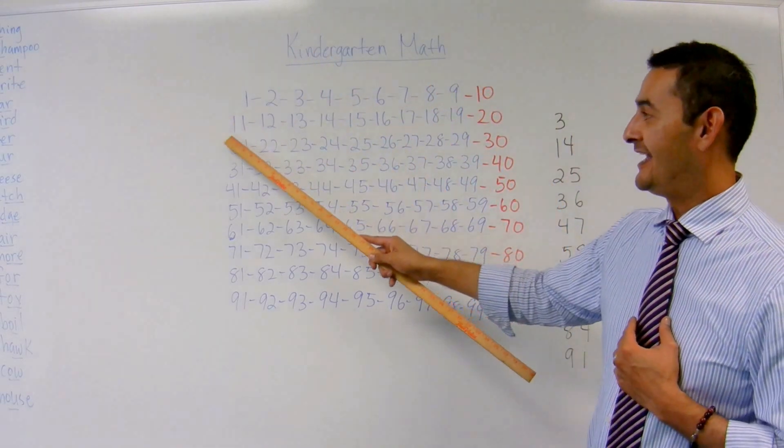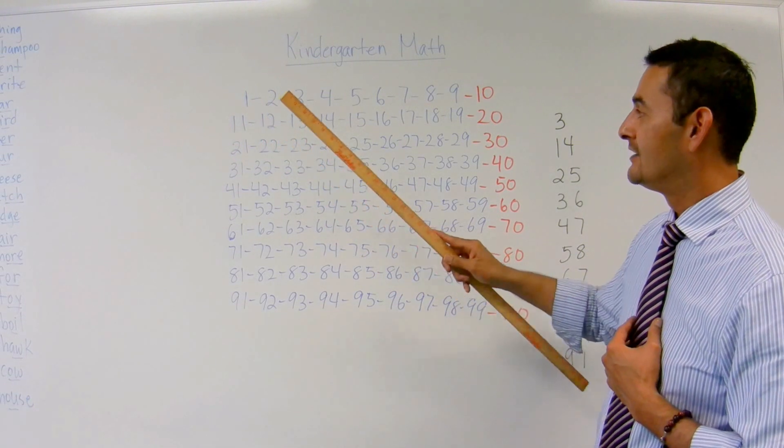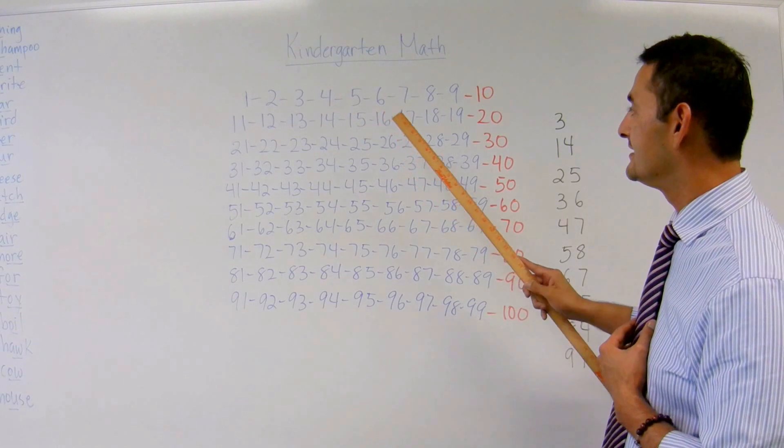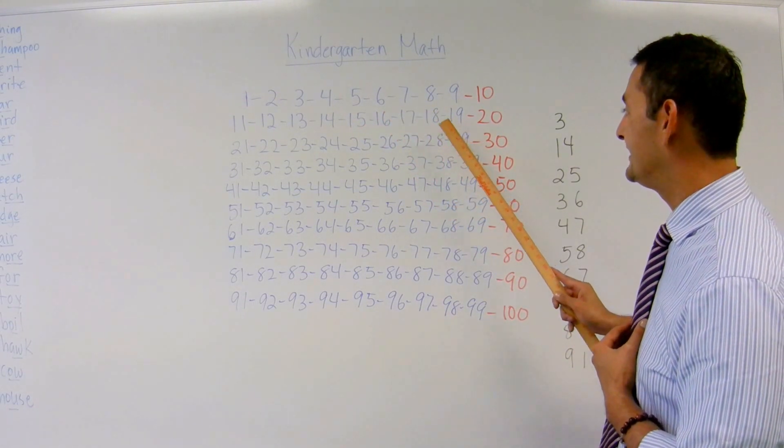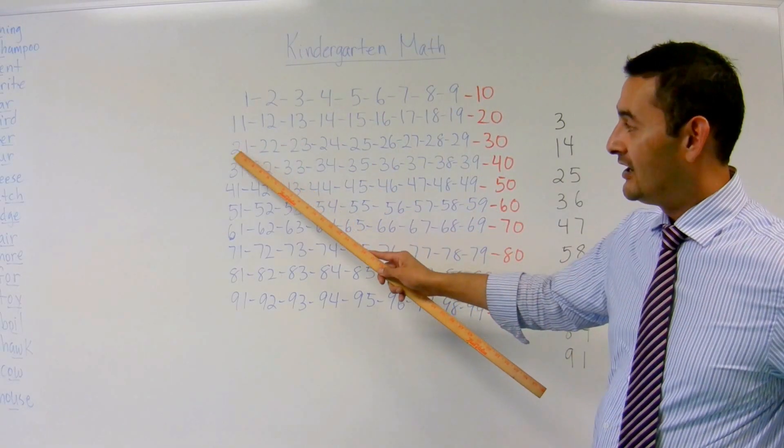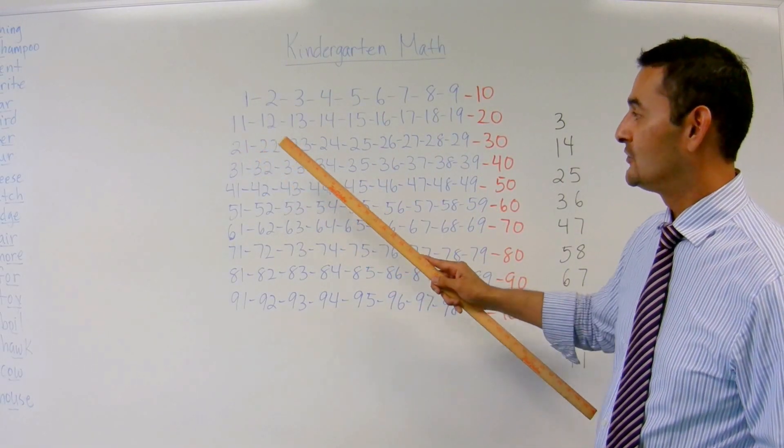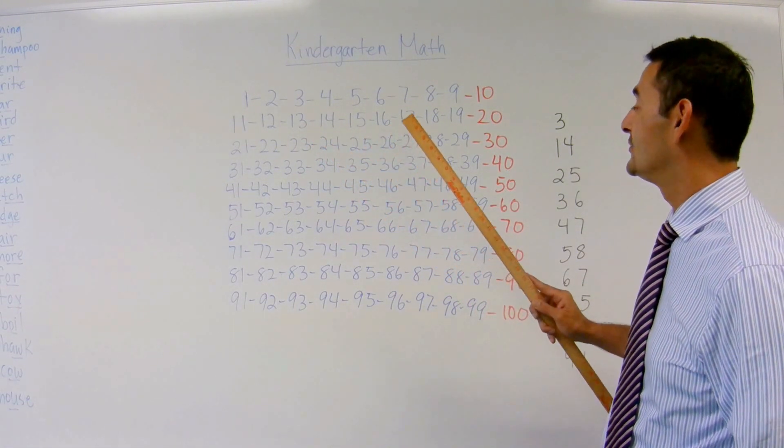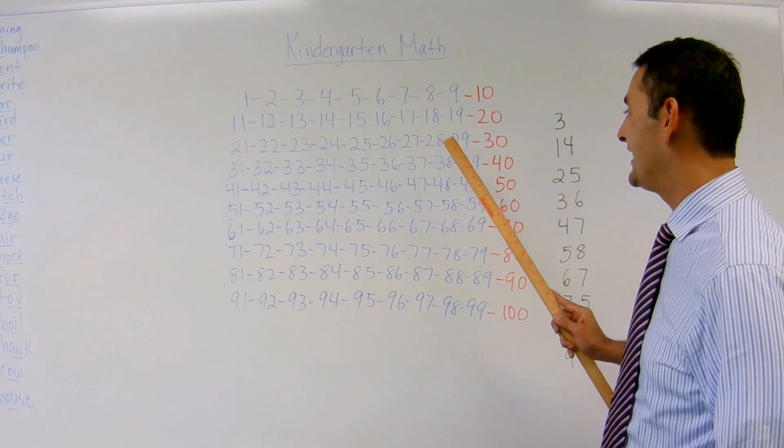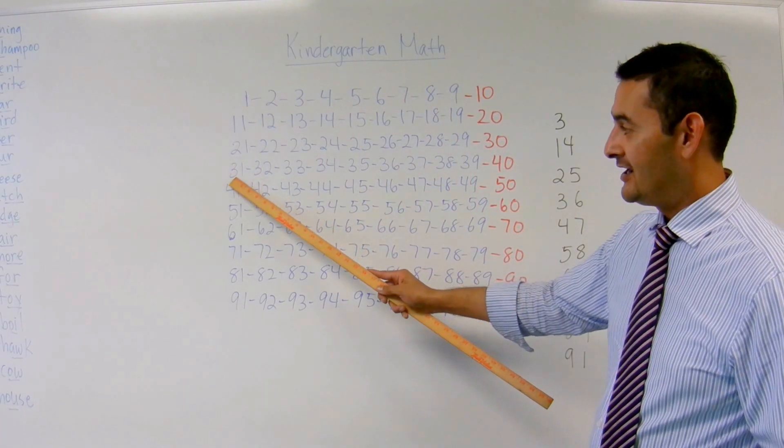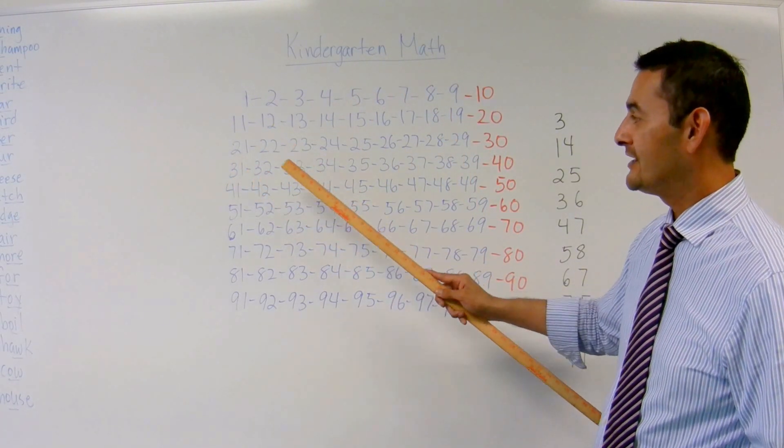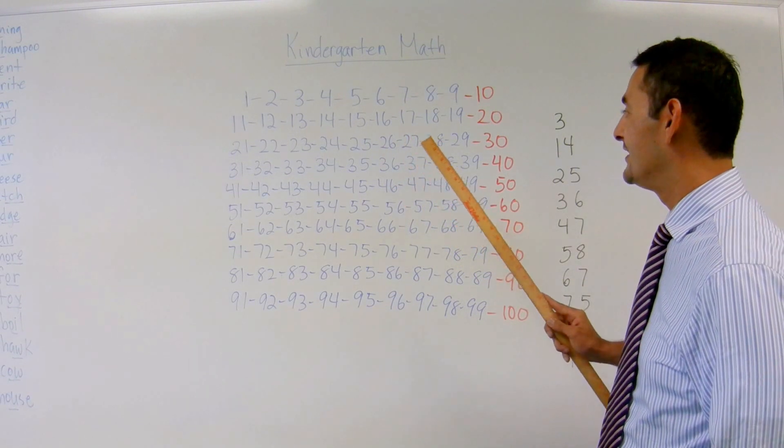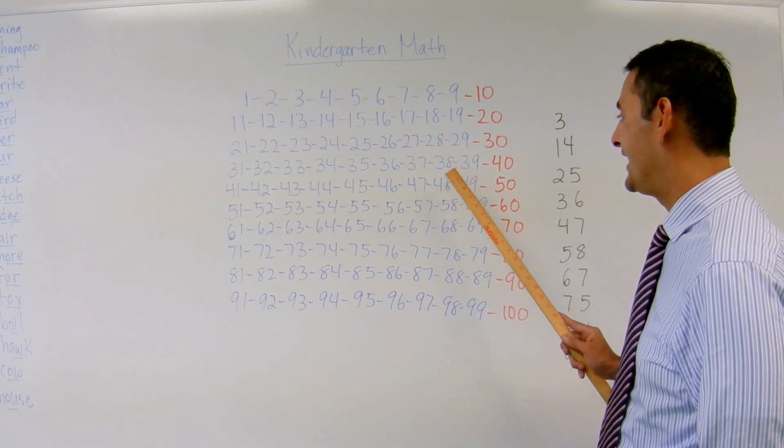11, 12, 13, 14, 15, 16, 17, 18, 19, 20. Ready? 21, 22, 23, 24, 25, 26, 27, 28, 29, 30. 31, 32, 33, 34, 35, 36, 37, 38, 39, 40.